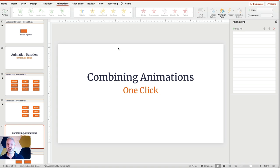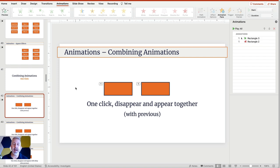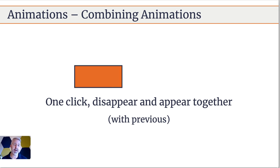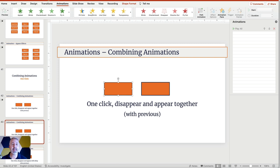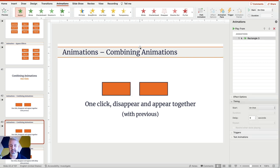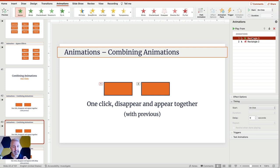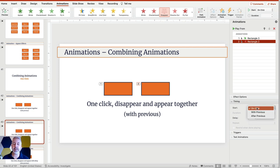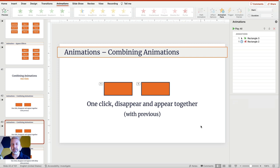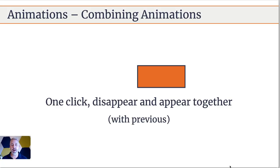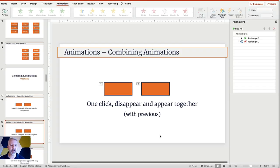Let's talk about combining animations. We talked before about making two animations happen on one click — let's take that a step further. This gets into methods of using PowerPoint's features to make things happen that aren't built in as single features. In this example, one click makes items replace each other: we set one shape to appear on click, and then set the other to disappear — but the key is to set the disappear to after previous rather than on click. So when you click once, it appears and then immediately disappears.